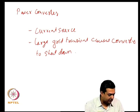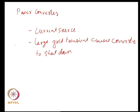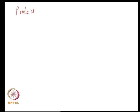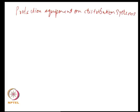After considering the power conditioning devices — which can be machines or power converters — we will consider what sort of protection equipment would be on a typical distribution system. If you are looking at protection equipment, you are looking at over-voltage protection or overcurrent protection. For over-voltage protection you are looking at things such as surge arrestors.